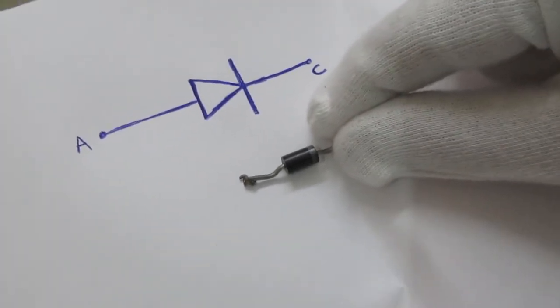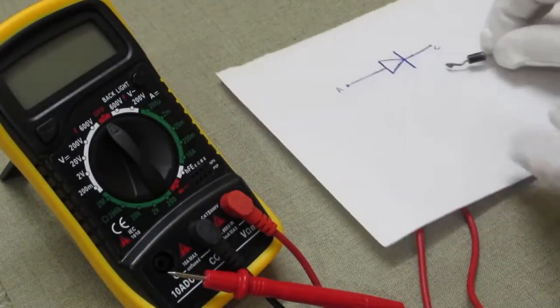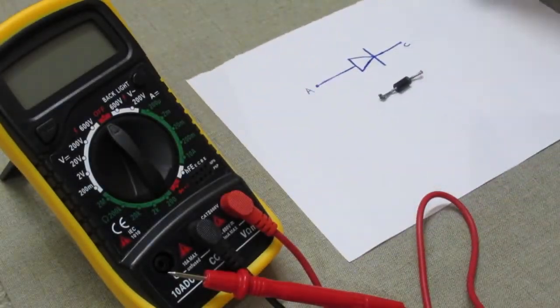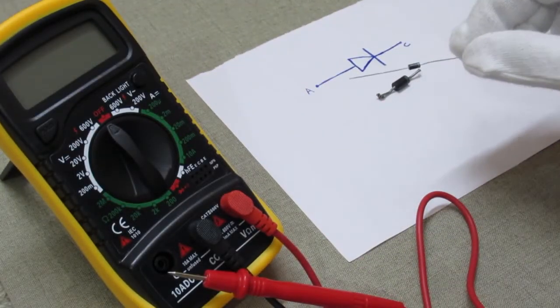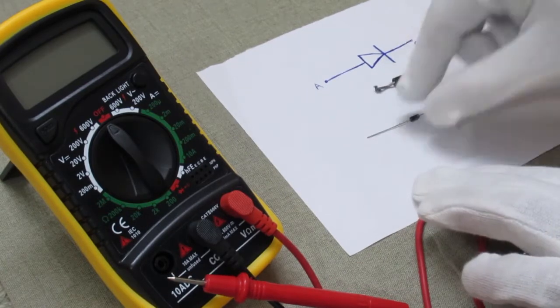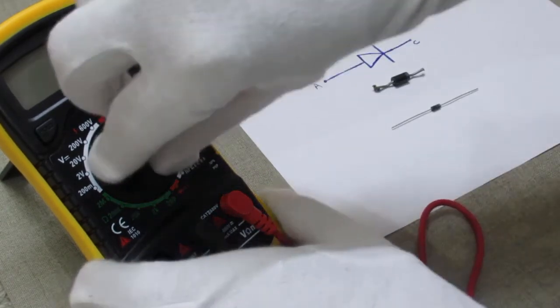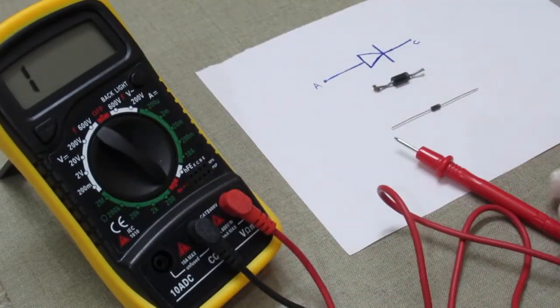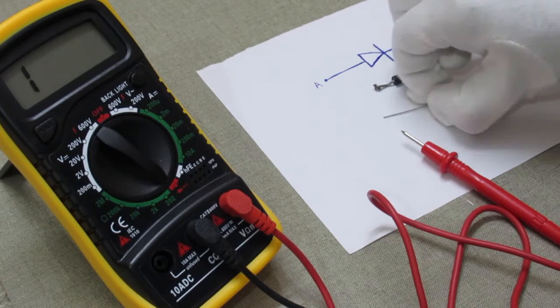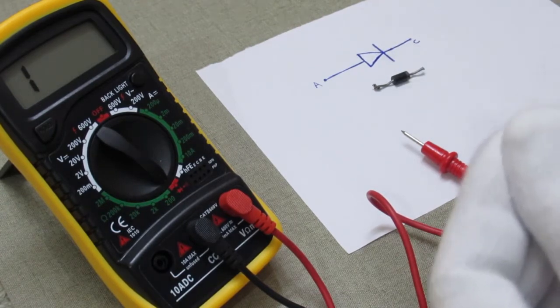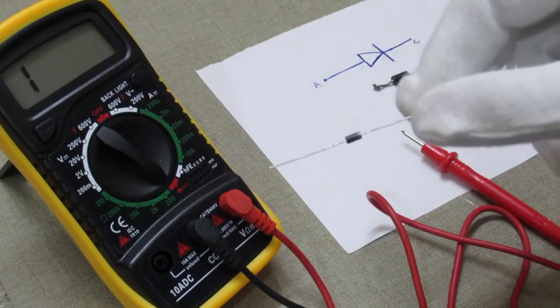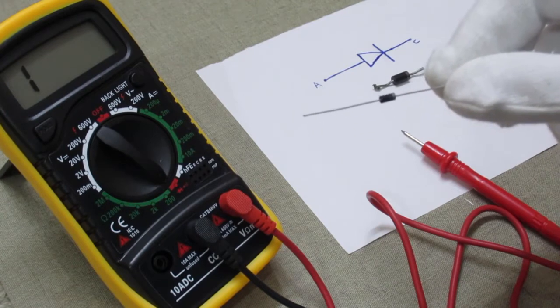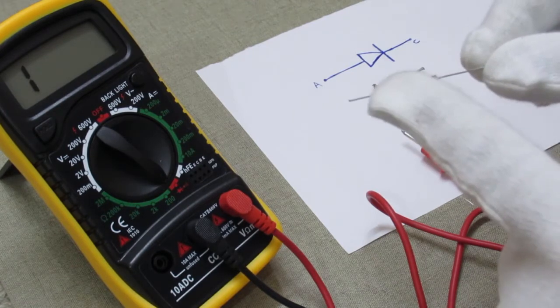Checking the diode is very simple with the help of a digital multimeter. For this, just rotate the digital multimeter rotary switch onto beep or diode testing point and take one diode. Now let's check.